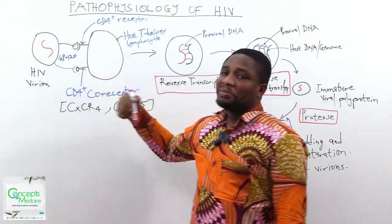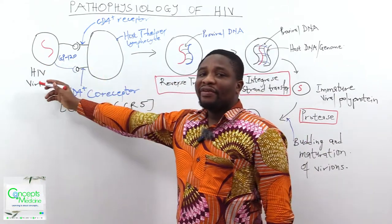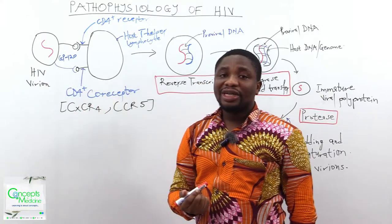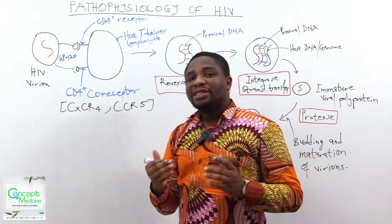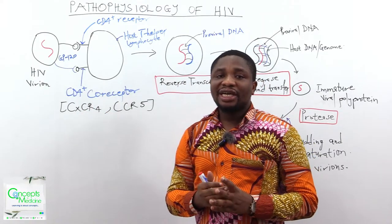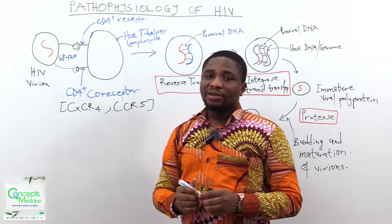When you look at this diagram, we are starting with the HIV virion. And when we say virion, what does it mean? It means the infectious form of HIV outside the host cell.